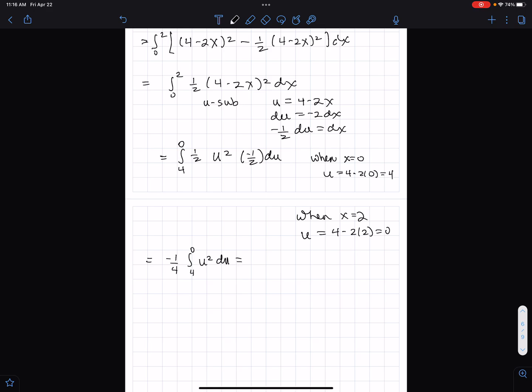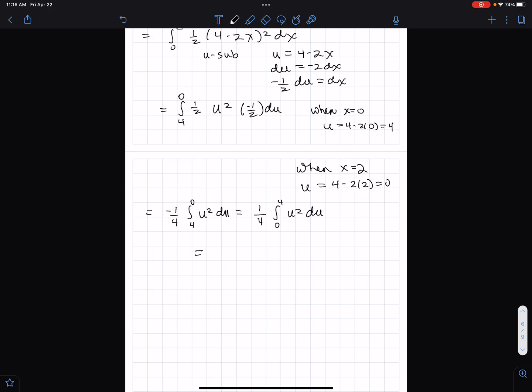And what I do is I flip these bounds of integration, because I like the greater number on the top. You don't have to do that, but I'm going to do that. If I flip those, I change this negative to a positive. And then I just integrate, and I get 1 fourth times u to the third power over 3 from 0 to 4.